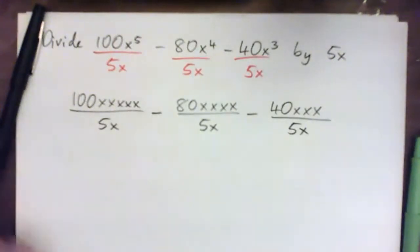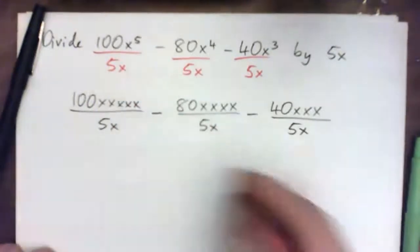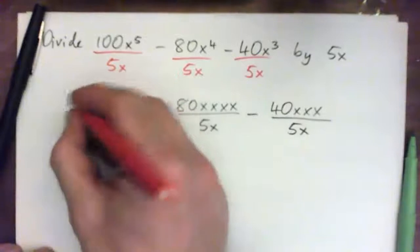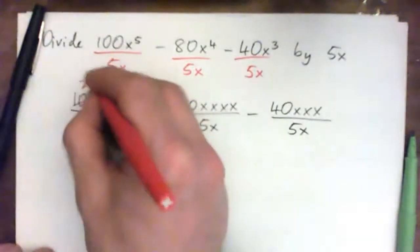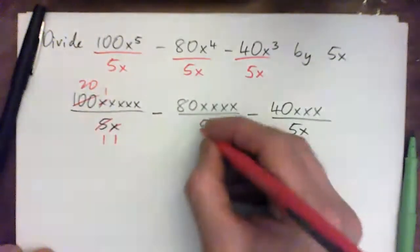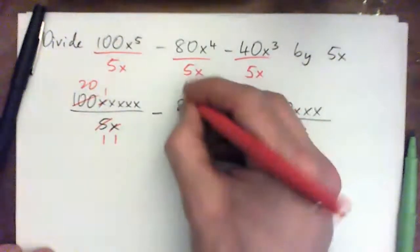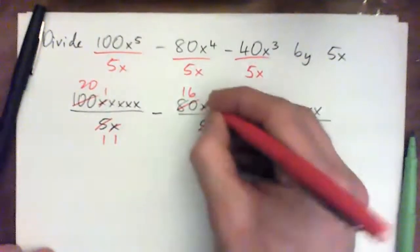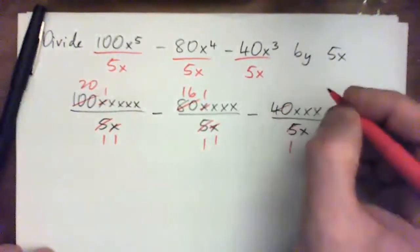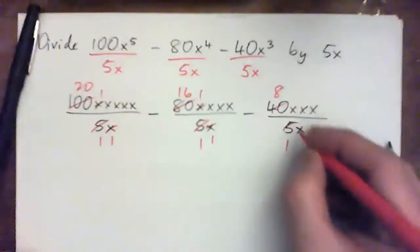Okay, I hope you all pressed pause and tried it. So we've got to cross-cancel common factors and then solve. So 5 to 5 goes once, 5 to 100 goes 20 times. X to the x goes once here and here. And then 5 to 5 goes once, 5 to 80 is 16. X to the x cross-cancels. 5 to 5 once, 5 to 80 is 8 times. And the x's cross-cancel.